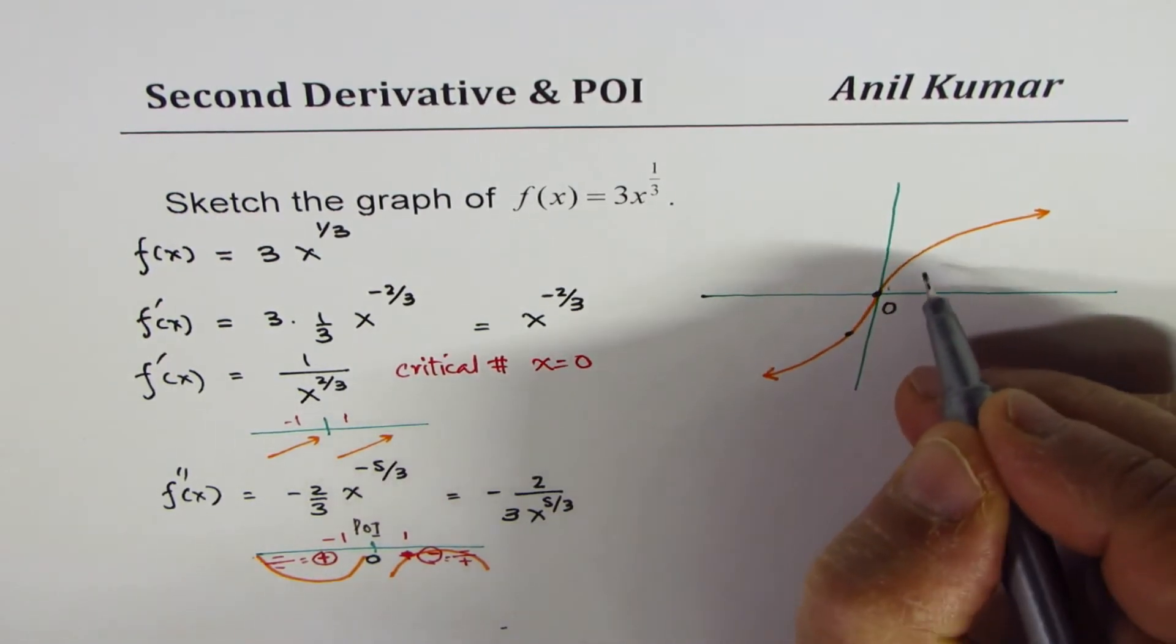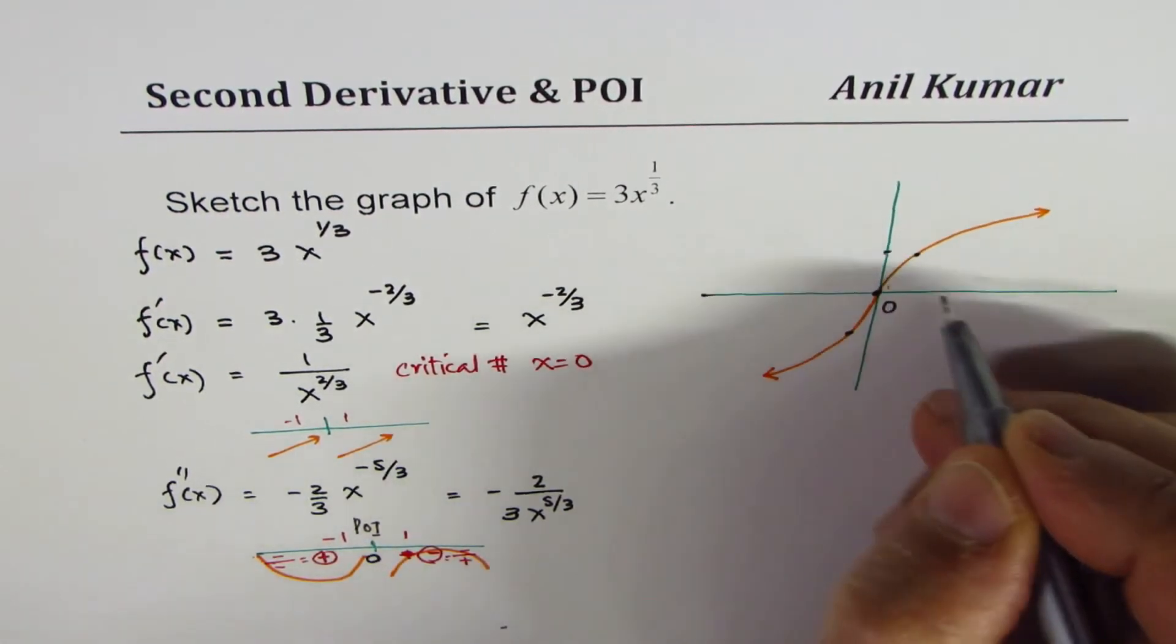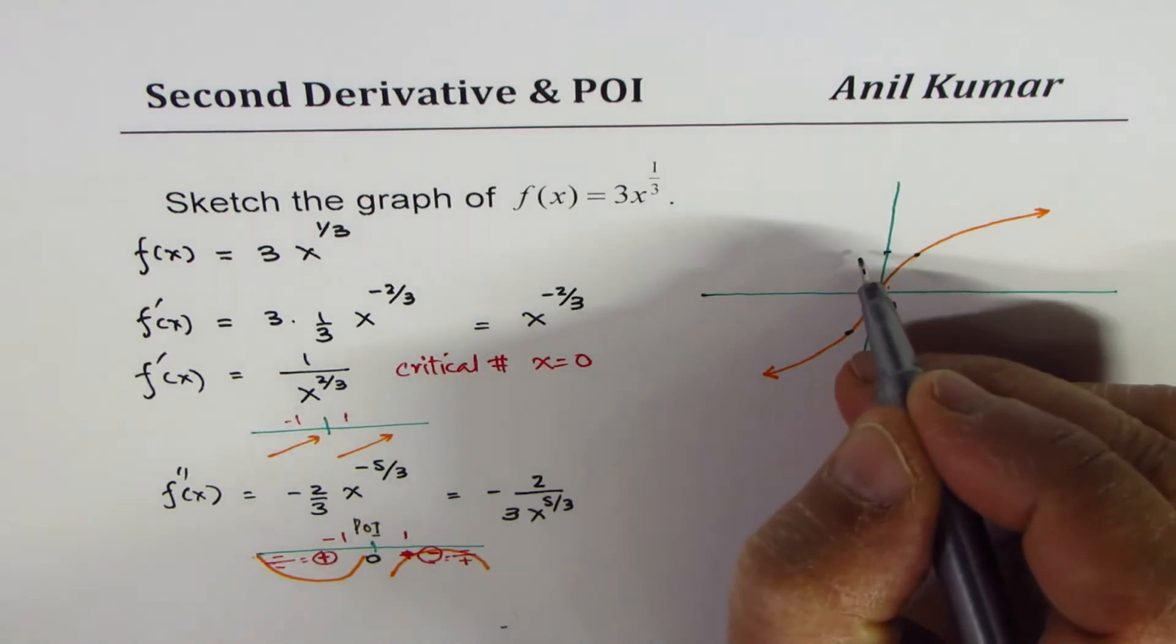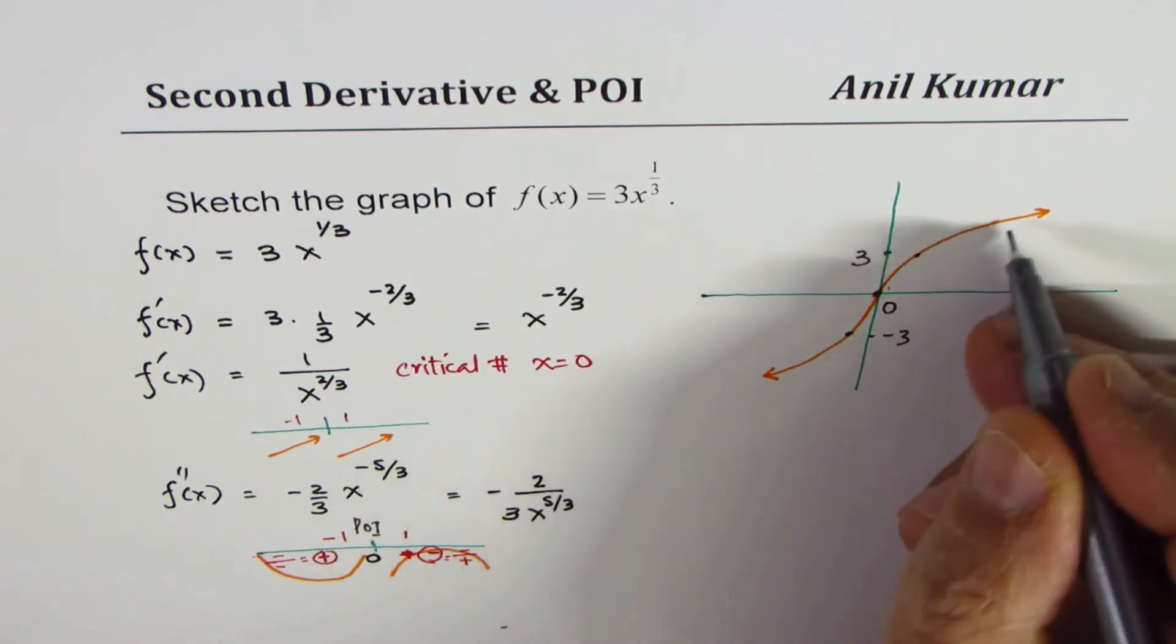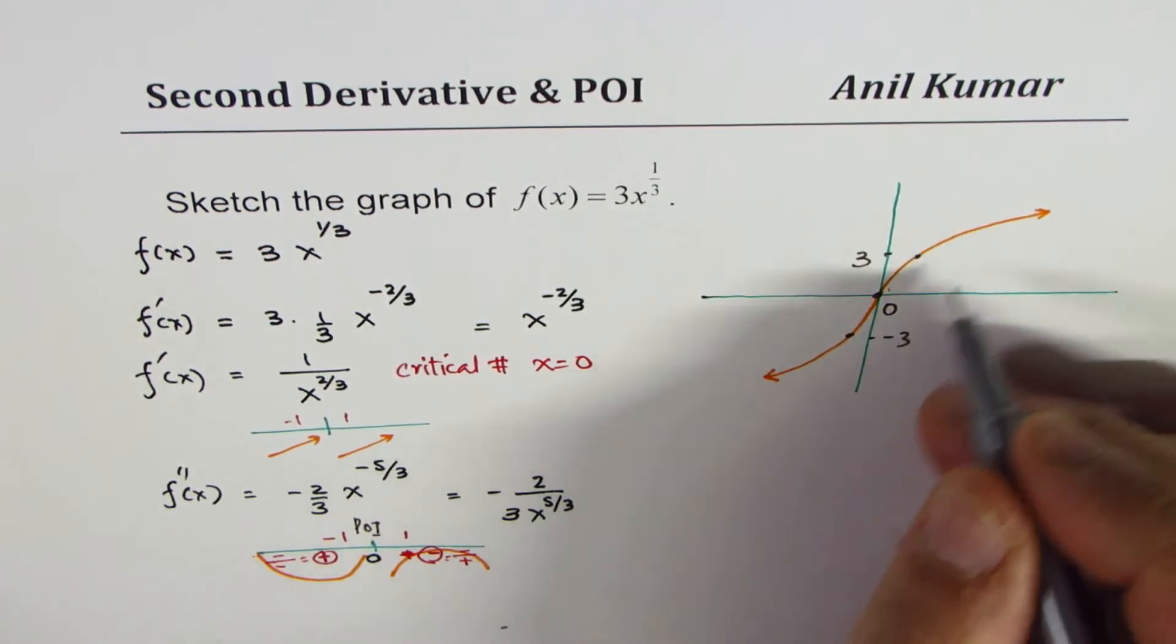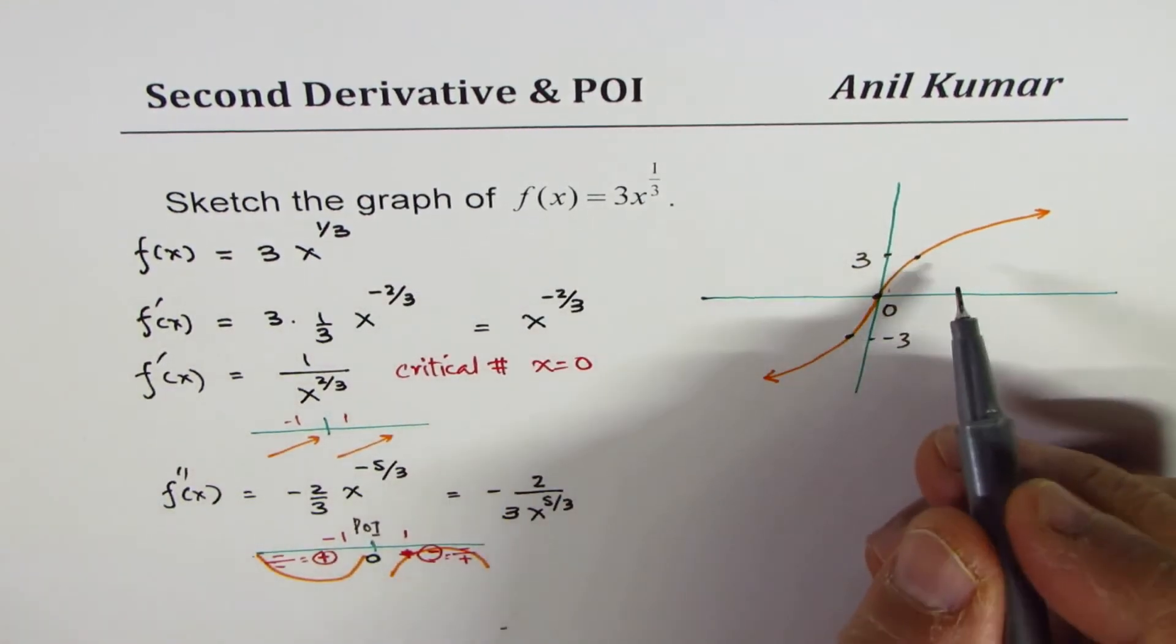To get better points here, what you could do is you could always substitute 1, and when you do that, you get plus 3. And if you substitute minus 1, you get minus 3. And you get a few more points to sketch this particular graph.